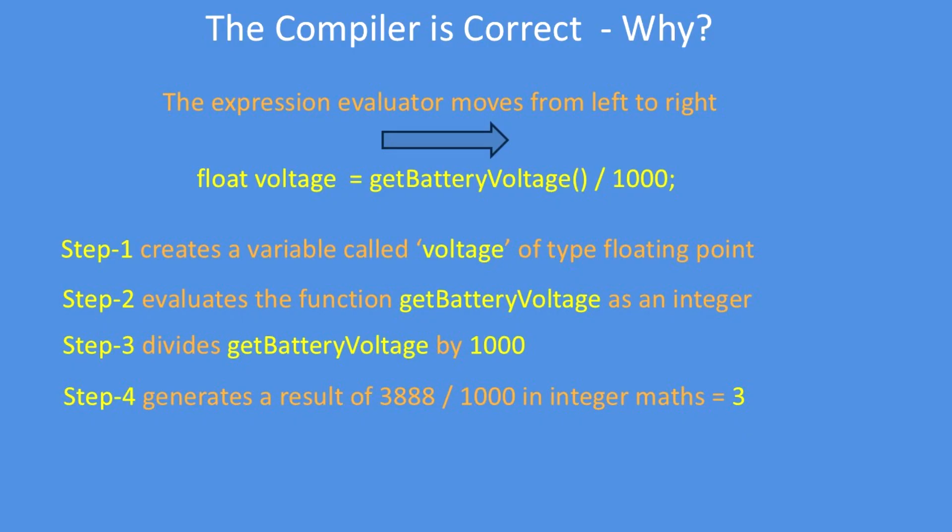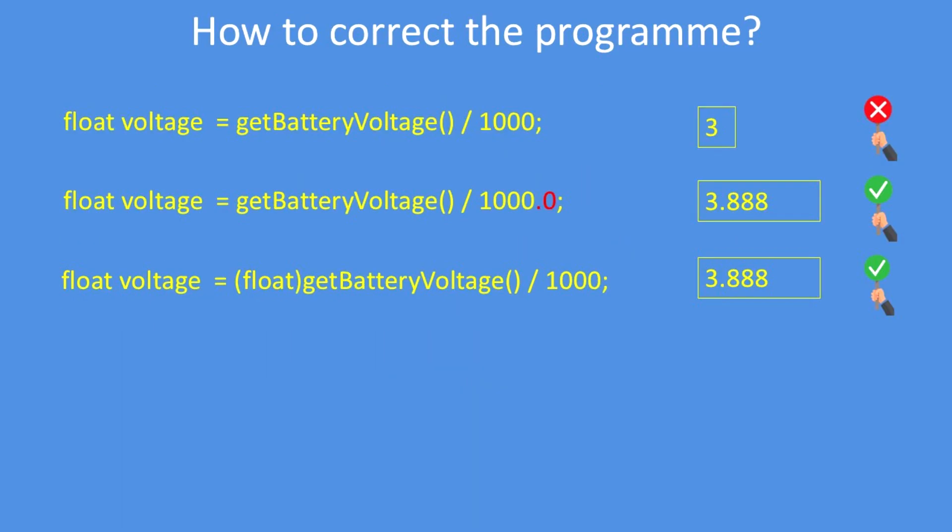So how do we solve this? Well, the first expression is wrong. The second one will correct it, and that is to add a decimal place, so decimal zero at the end of each divisor. That will force the result to be a floating point.